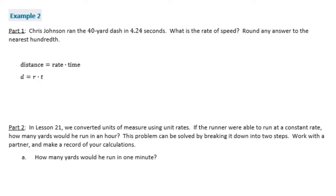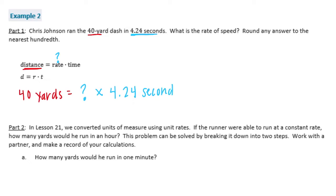Our distance is 40 yards, so we know that 40 yards equals the rate times time. We know that time is 4 and 24 hundredths seconds; we don't know the rate. Working backwards, we're going to divide: the rate equals 40 divided by 4 and 24 hundredths.